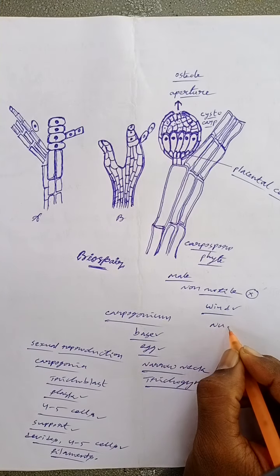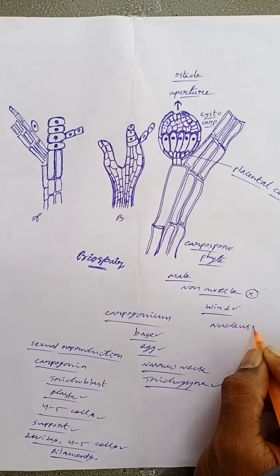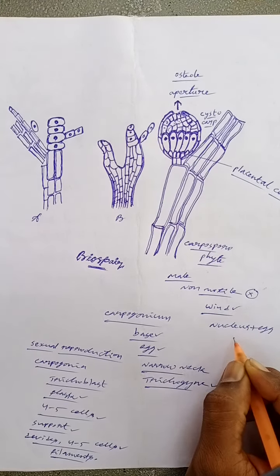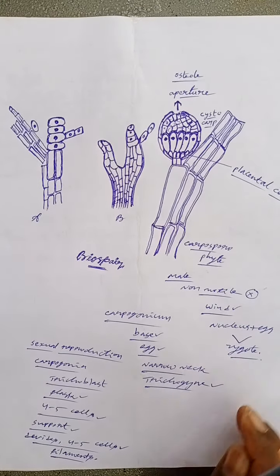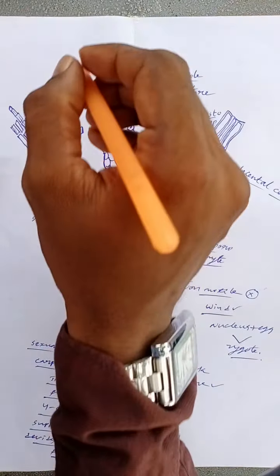So these are the identification characters of polysiphonia. Now let us see the post-fertilization changes that occur in this polysiphonia.